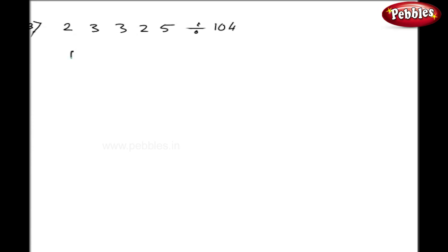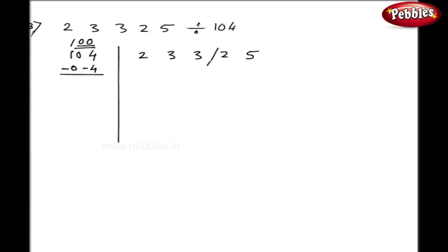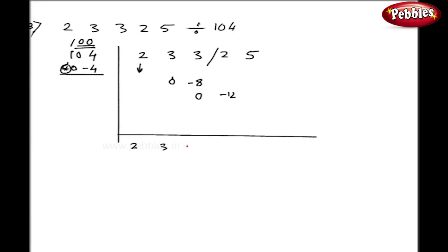Let me take one more example: 23325 divided by 104. I will write 104. My base is 100 and my difference is minus 4. I have to write minus 4 as minus 04, which means minus 0 and minus 4 separately. Write the dividend 23325. I have two zeros in the base so I give a stroke after two digits. Take 2 down. 2 into 0 — since 0 has no sign, 2 into 0 is 0. 2 into minus 4 is minus 8. I get 3 here. 3 into 0 is 0, 3 into minus 4 is minus 12.